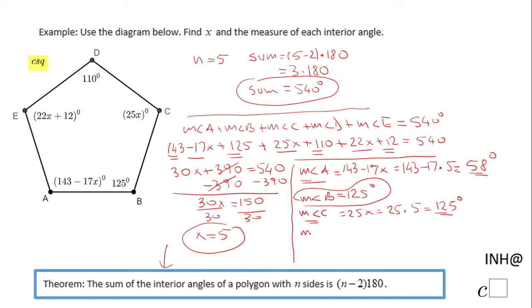The measure of angle D is also given to us: 110 degrees. The only one we need to find out is the measure of angle E, which is 22x + 12, which means 22 times 5 plus 12. And that will be 122 degrees.